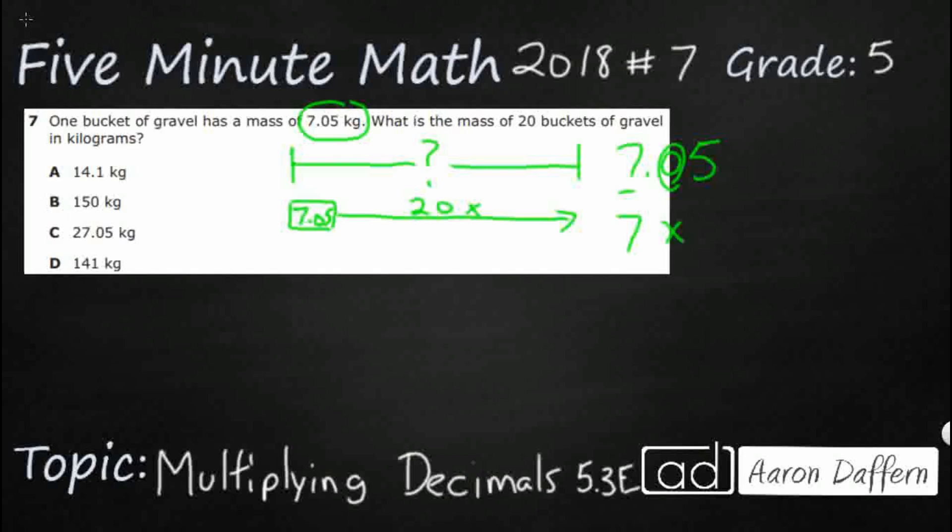If we wanted to multiply that by 20 just to give us an estimate as to what our answer is going to be near, we actually see that's going to give us our answer really quickly. Take a look at this.